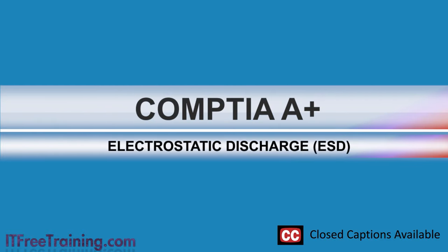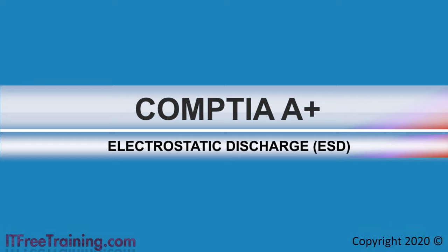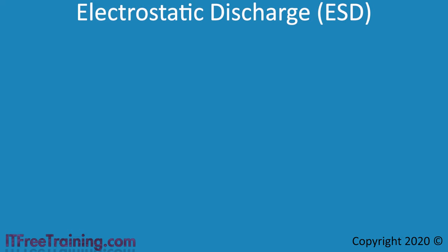In this video from ITFreeTraining, I will look at electrostatic discharge. Electrostatic discharge occurs when a statically held charge moves to another object that has an unequal charge in order to balance the charge held between the two objects. This can damage electronic devices. This video will look at how you can prevent electrostatic discharge from damaging your equipment. To start with, I will look at what electrostatic discharge, or ESD, is.